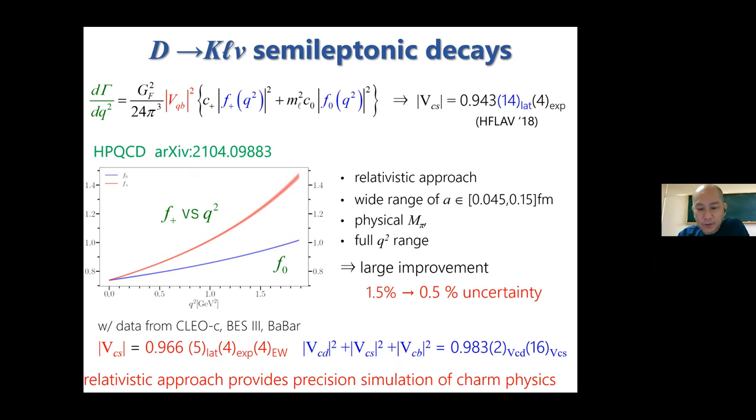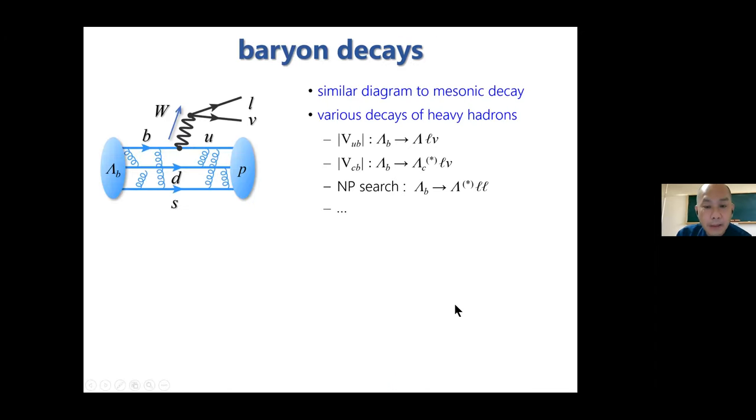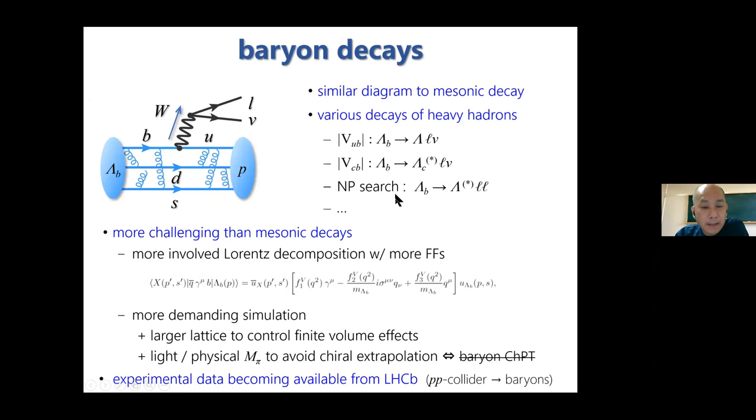For the value of baryonic decays, there are many cases. Some of them provide independent determination of the CKM element and some provide good probes of new physics. But I have to say that baryonic decays are more challenging than mesonic decays because we have more involved operator decomposition of the matrix element. In general we have more form factors to be determined from lattice QCD. The simulation itself will become more demanding because you want to use larger lattices to control finite volume effects and also use lighter, hopefully physical, pion mass to control or avoid chiral extrapolation.